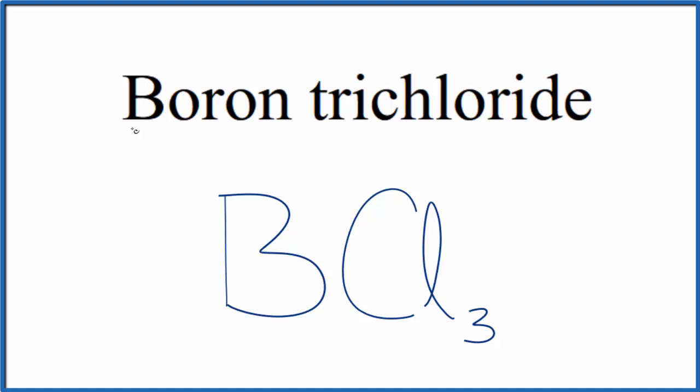So for B, you'd write boron. Then you'd have tri, because you have three chlorine atoms. Change the ending of chlorine from chlorine to chloride, and you have the name for BCl3.